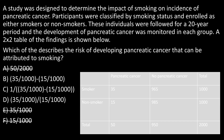Now we've narrowed it down to the three more complicated-looking choices. Looking at D, it's essentially E divided by F — dividing the risk in the exposed group by the risk in the unexposed group. When you divide the risk of the exposed by the unexposed, that gives you the risk ratio, also called relative risk. But they're not asking for relative risk, they're asking for attributable risk, so we eliminate D as well.